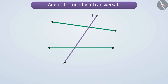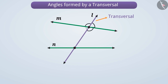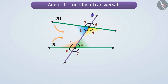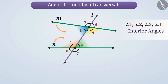Look here. Line L is intersecting lines M and N at different points, which is why we can call it a transversal. We can see that angle 1, angle 2, angle 3, and angle 4 are in between lines M and N. All the angles formed in between two lines by a transversal are called interior angles.